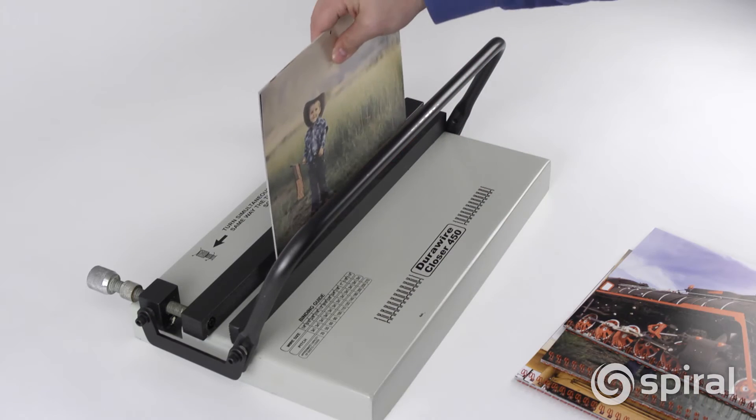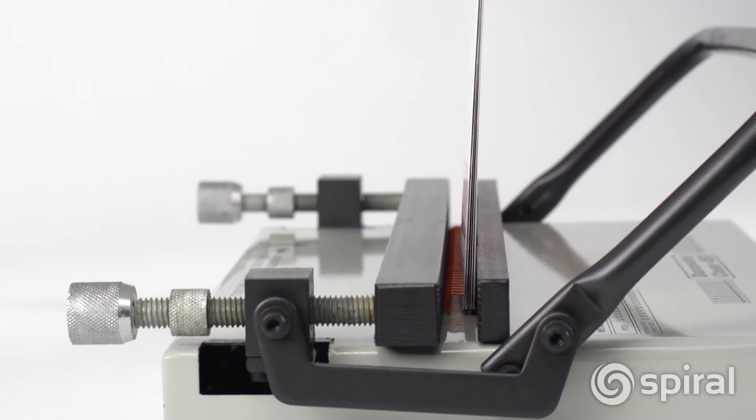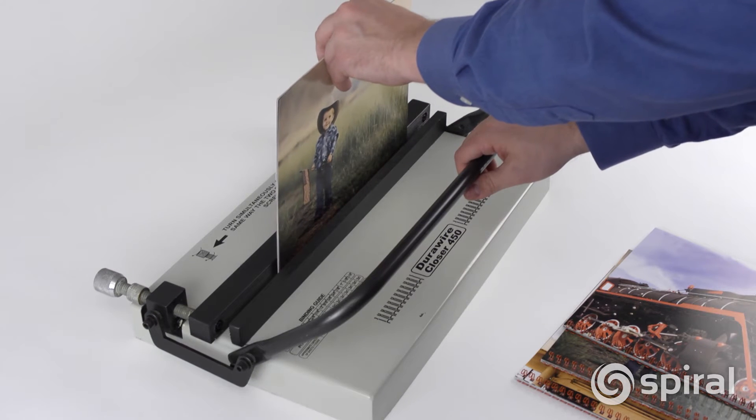Let's see it in action. Simply load your document onto the wire, drop it into the closing area, and pull the handle. It's that simple.